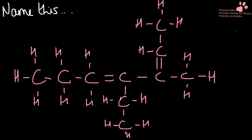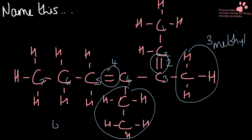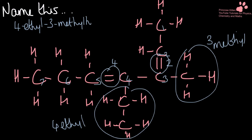Name this. Again, I've gone around a corner here. Numbering: one, two, three, four, five, six, seven. I've got my double bond on two, another double bond on four, a three-methyl, and a four-ethyl. Putting these in alphabetical order: 4-ethyl-3-methylhepta-2,4-diene.